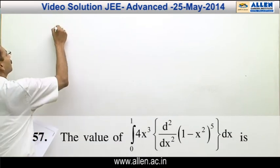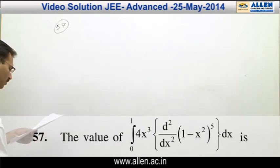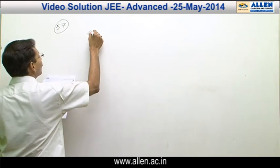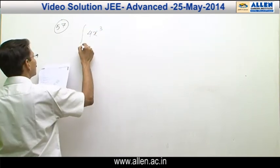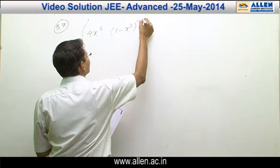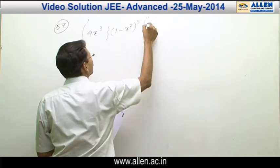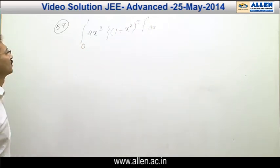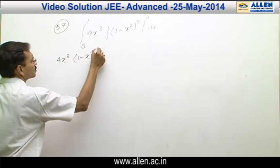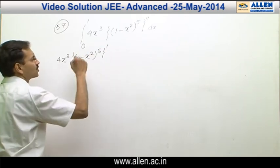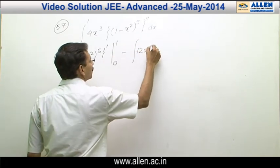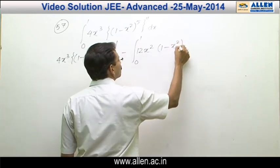Question number 57. It is a good problem of definite as well as indefinite integration. We will integrate by parts, considering 4x cubed as the first function and (1 minus x squared) raised to the power 5 as the second function. The integration of the second function gives (1 minus x squared) raised to the power 5, and we differentiate 4x cubed to get 12x squared into (1 minus x squared) raised to the power 5.